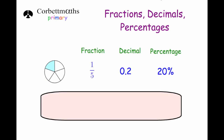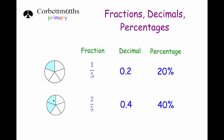Let's have a look at fifths. Here we've got a circle with five sections and one of them is shaded in, so that represents 1 fifth. As a decimal number, 1 divided by 5 is 0.2. And as a percentage, 100% divided by 5 is 20%, so each section is 20% and one of them would be 20%. That's an important one to learn.